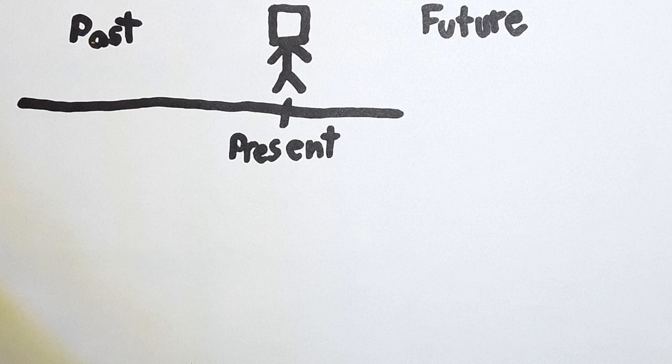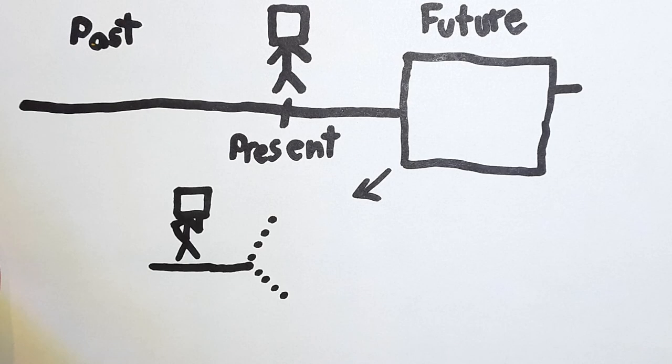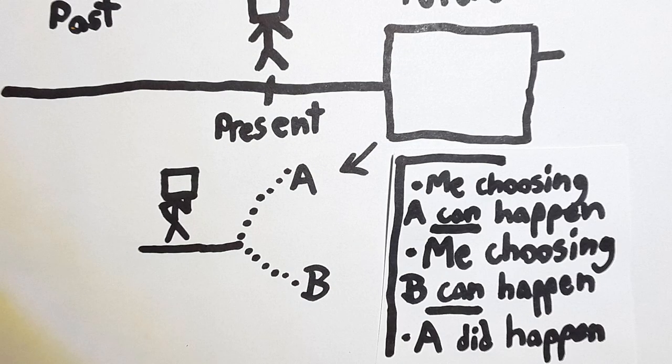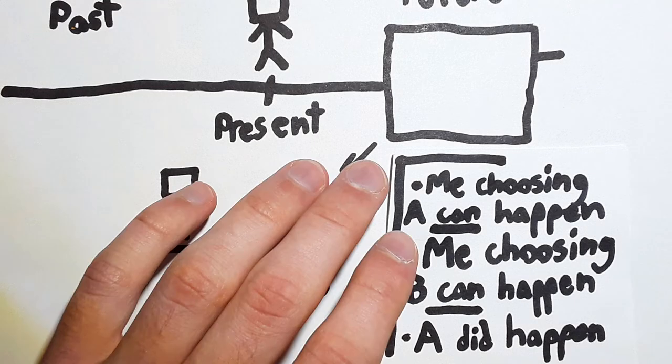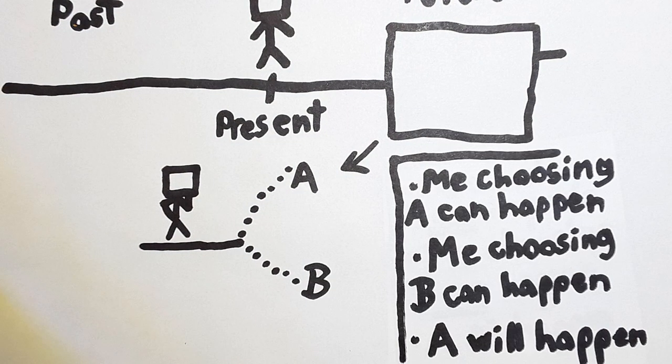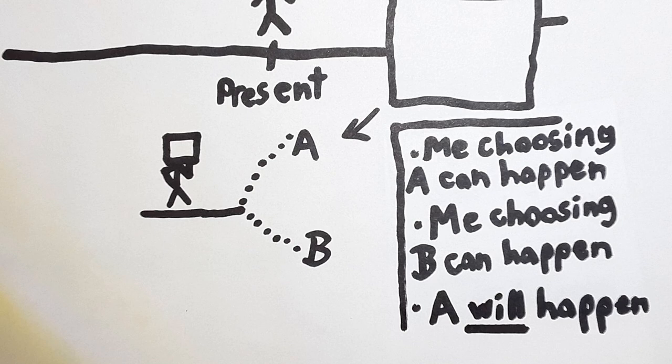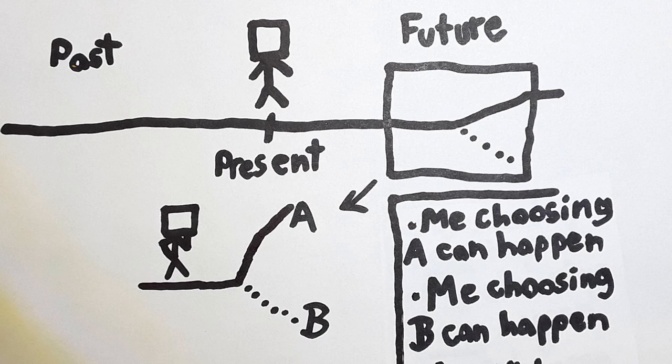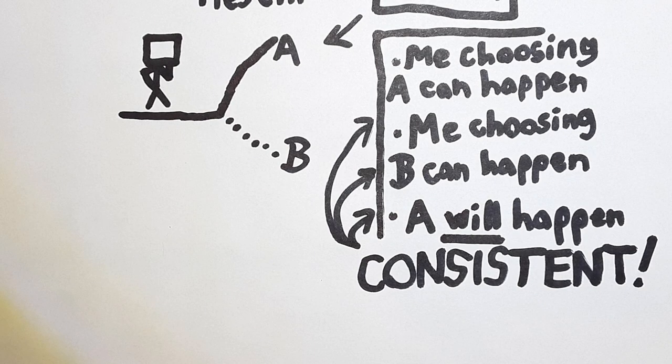Now, let's extend this logic to the future. Tomorrow, I will need to make another choice between A and B. All the facts about our last scenario will be the same, except we need to change the way they're worded so that they refer to the future. Instead of talking about what did happen, we're talking about what will happen. So, I could say that A or B can happen tomorrow, even though A will happen tomorrow. That's all internally consistent.